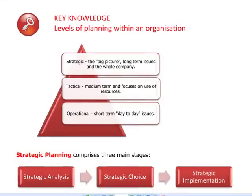On page 9, we're looking at different levels of planning within an organization. We've got three levels: strategic, tactical, and operational. Strategic looks at the big picture — all the long-term issues involved with the whole company, planning for the big picture, the strategy.